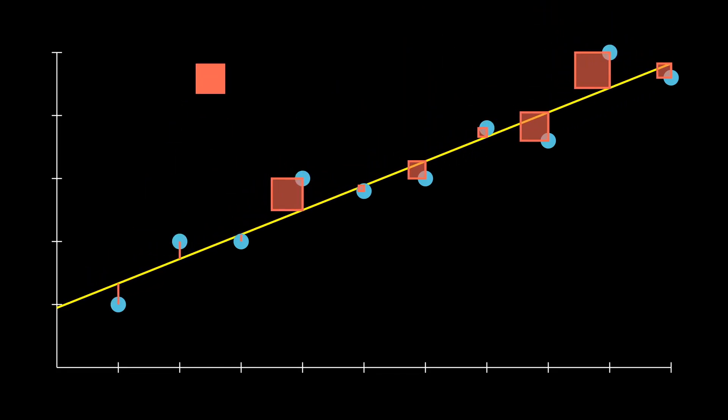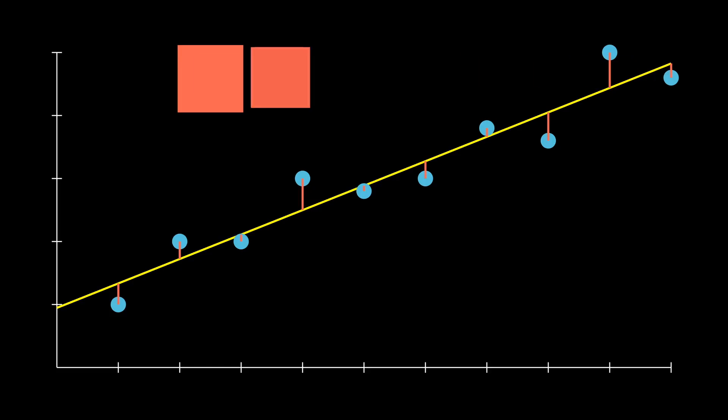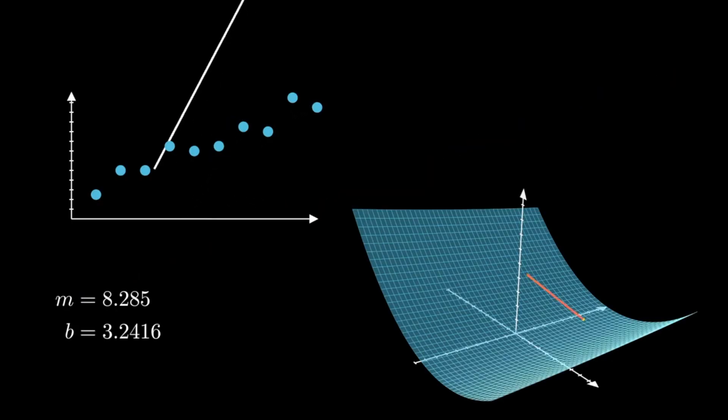If we total the areas of all of these squares for a given line, we will get the sum of the squared error, and this is known as our loss function. We need to find the beta 0 and beta 1 coefficients that will minimize that sum of squared error. The coefficients can be solved with a variety of techniques, ranging from matrix decomposition to gradient descent, which is depicted right here.